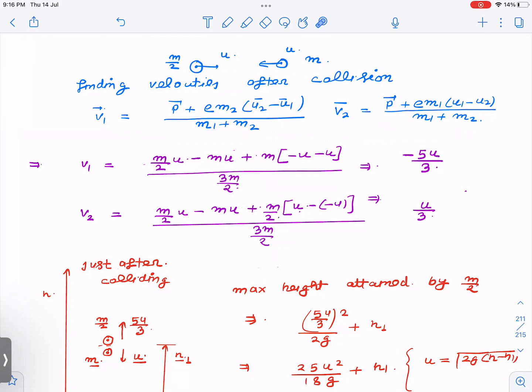So this is v₁ equals - initial momentum m₂u₂ minus m₁u₁. It's very easy to remember: 1-2-2 and here 2-1-1, and here m₁+m₂ in the denominator. So this is m/2 times u minus mu.